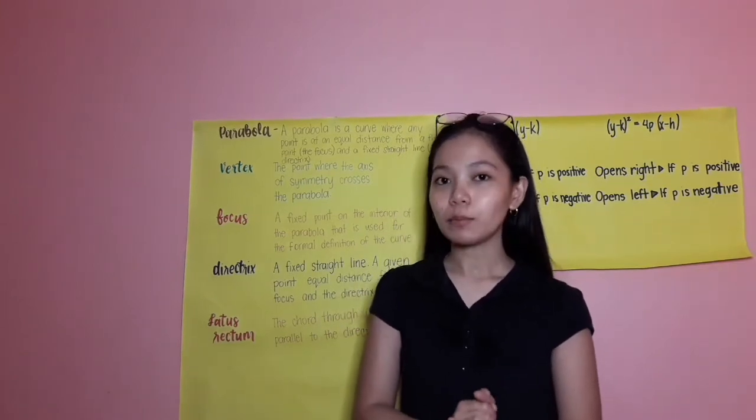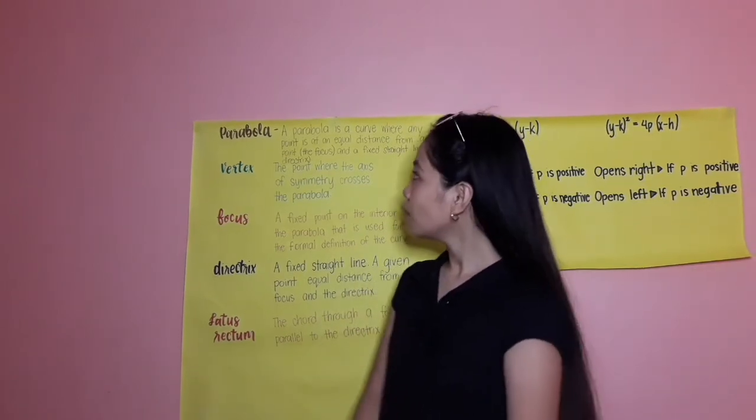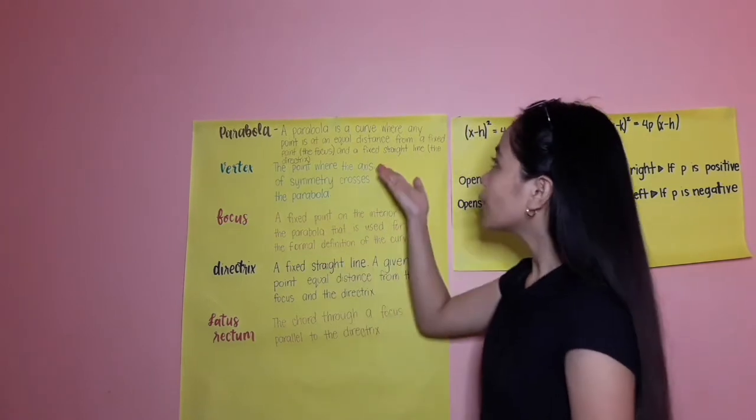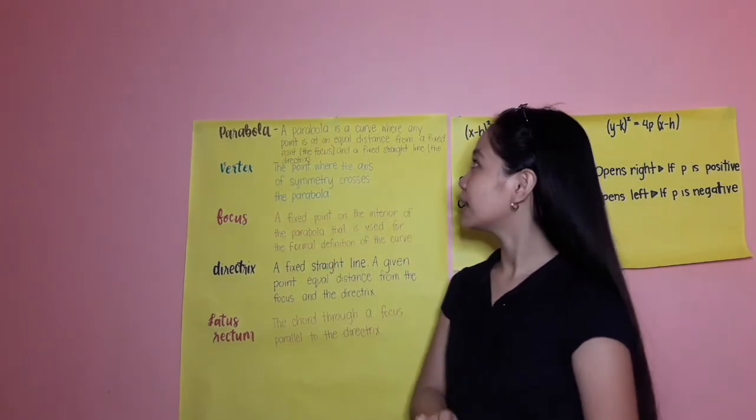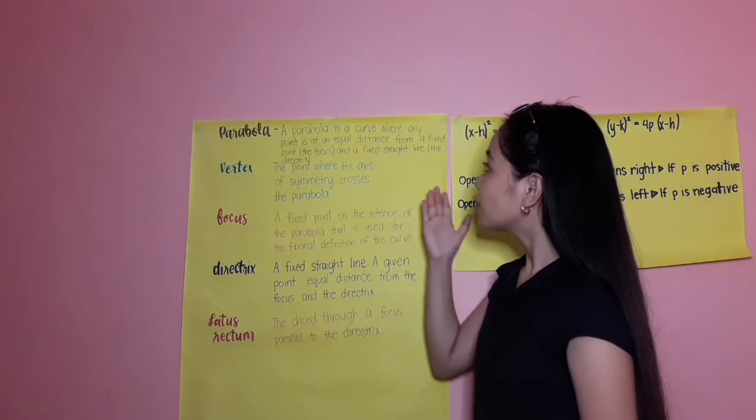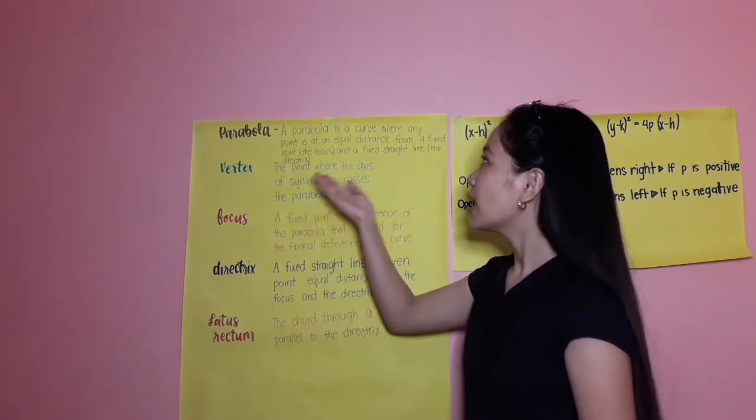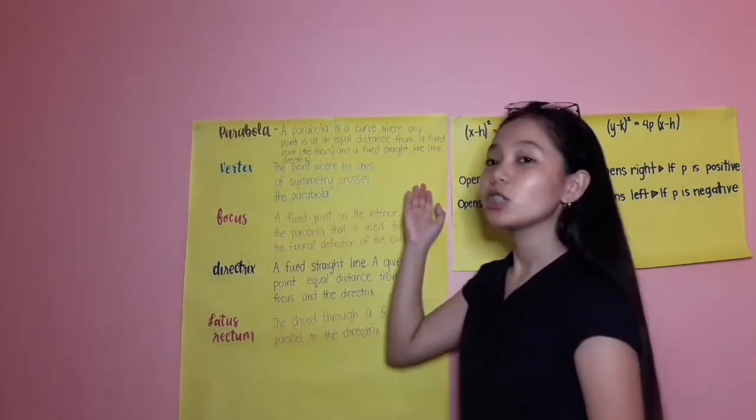What do you mean parabola? A parabola is a curve where any point is at an equal distance from a fixed point, the focus, and a fixed straight line, which is the directrix.